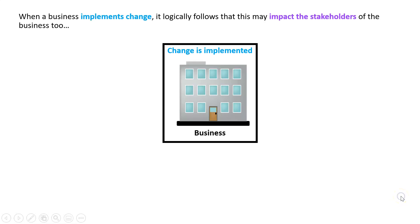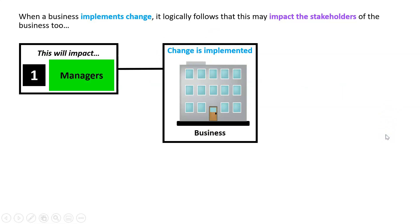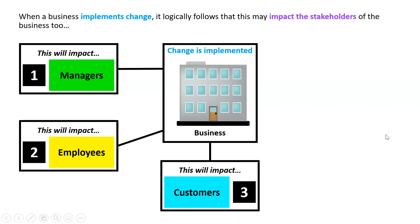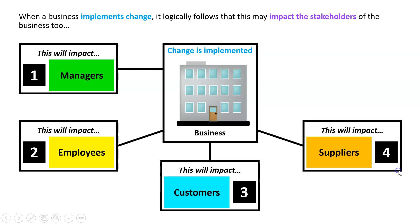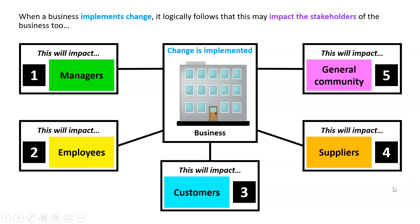Earlier in the course we did a range of stakeholders, however for this topic the study design just wants us to consider five. So when a business implements change, it logically follows that this will impact the stakeholders of the business too. The five we're going to look at are managers, employees, customers, suppliers, and the general community.